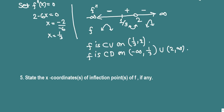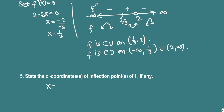Finally, we state the x coordinates of inflection points — where concavity changes. At x equals 1/3, the concavity changes from concave down to concave up, so x equals 1/3 is an inflection point. Although concavity also changes at x equals 2, that point is not in the domain, so it is not an inflection point. Therefore, x equals 1/3 is the only inflection point.